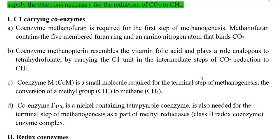Coenzyme M is a small molecule especially required at the terminal step of methanogenesis. It is mainly involved in the conversion of the methyl group into methane at the terminal step. The last coenzyme is coenzyme F430, which is a nickel-containing tetrapyrrole cofactor. It is also required at the terminal step as part of the methyl reductase enzyme complex, which is involved in the final reduction of carbon dioxide into methane.